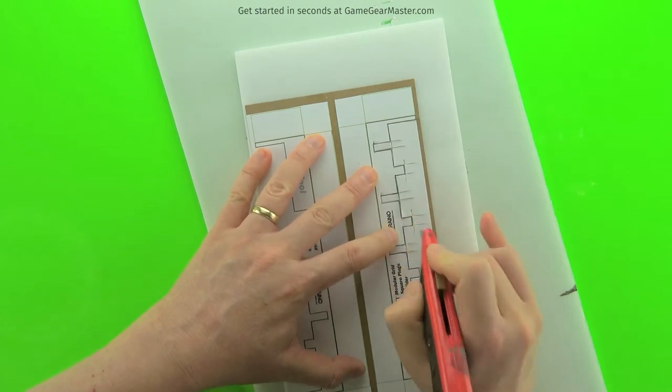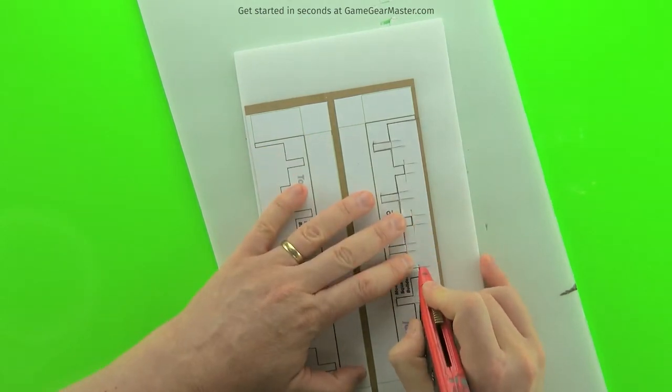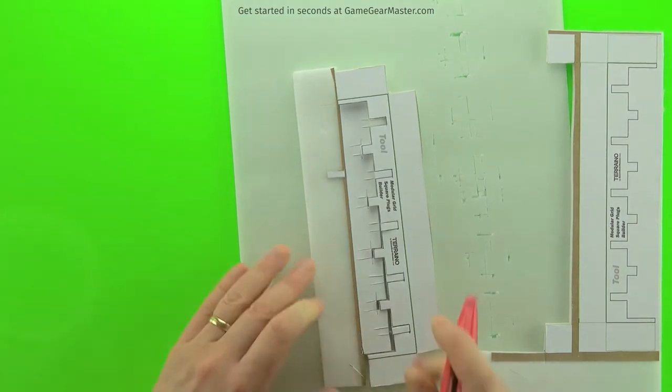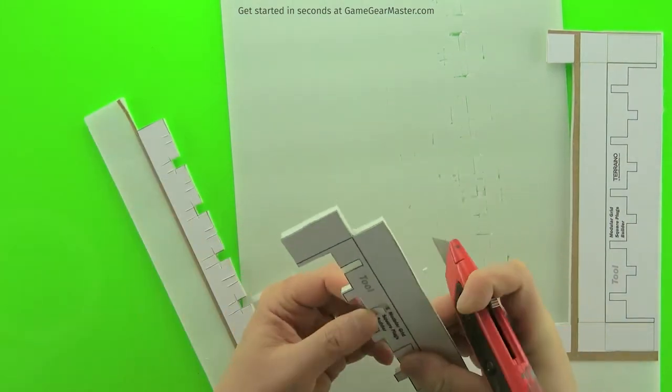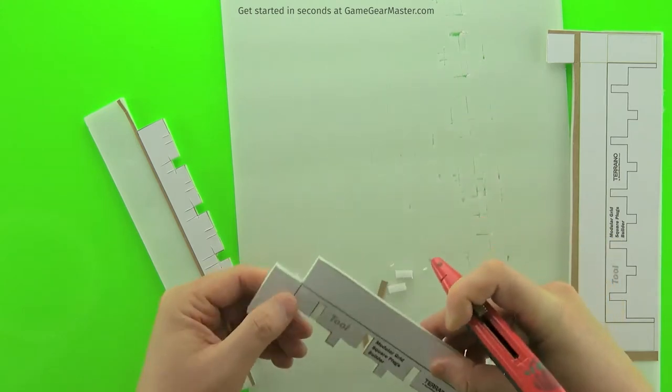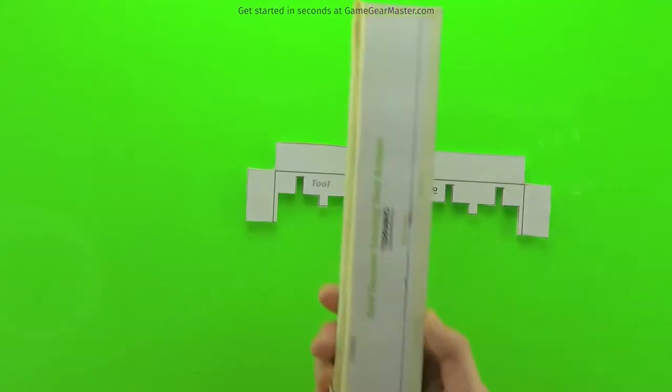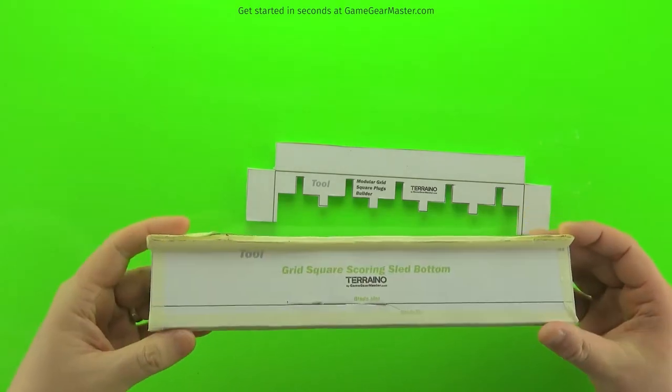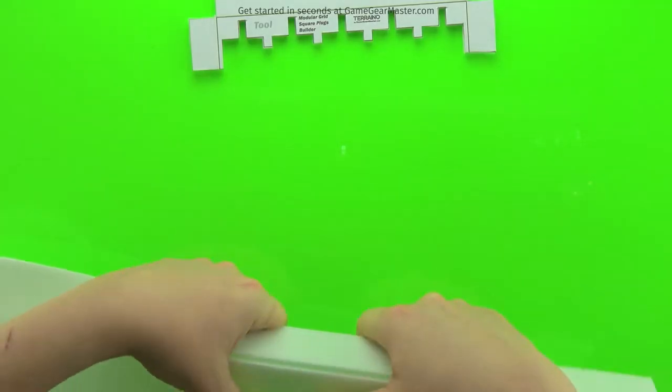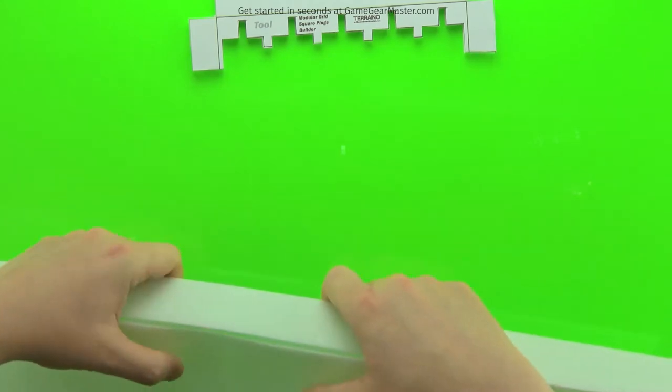Once you have the template printed onto the cardboard and foam, just cut it out like you would for any other template. You'll end up with this cardboard foam and template piece. Now you're going to use your grid scoring sled to cut a strip of foam board that is a grid square's width, and we're going to use that to build the rest of the tool.